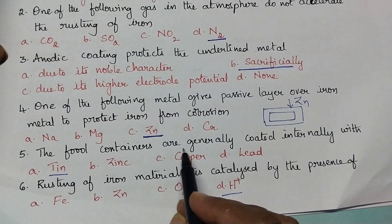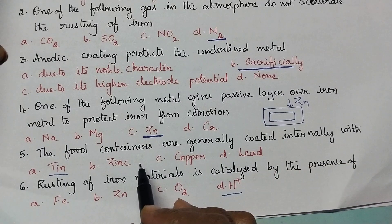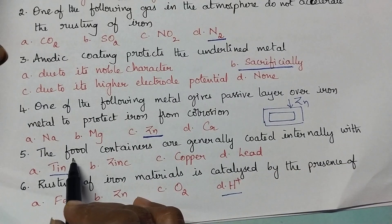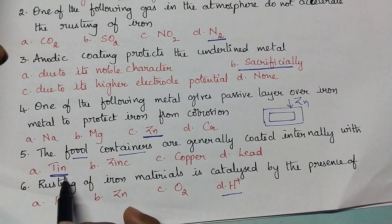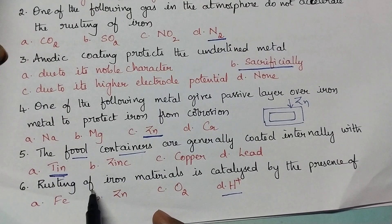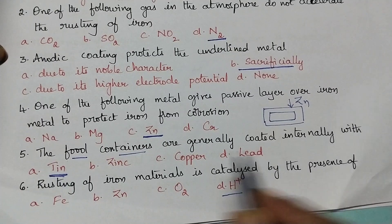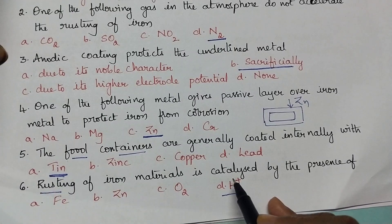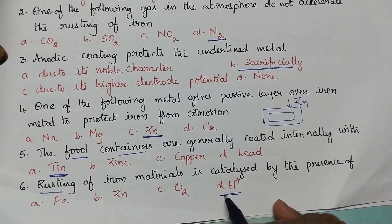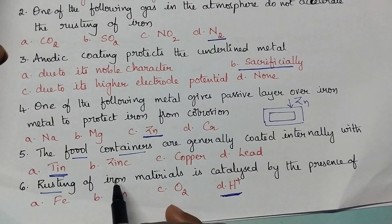The food containers are generally coated internally with tin metal in order to store food items. Rusting of iron materials is catalyzed by the presence of H+ ions. Rusting is an oxidation process and it is always accelerated by the presence of H+ ions.